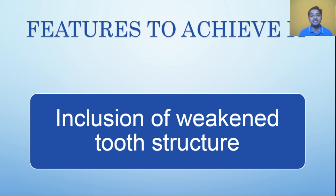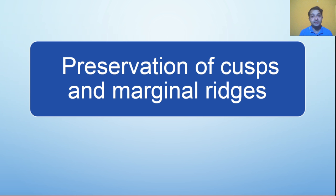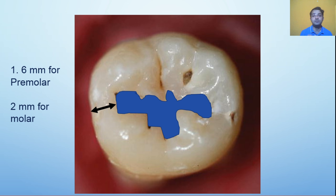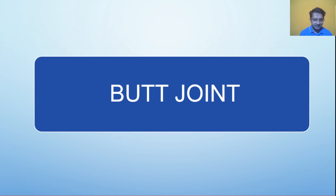To achieve this goal, we must include weakened tooth structure and be conservative, preserving the cusp and marginal ridge. The minimum thickness of the marginal ridge after cavity preparation should be 1.6 mm for premolars and 2 mm for molars. Maintaining this amount of marginal ridge ensures the tooth structure retains good strength.